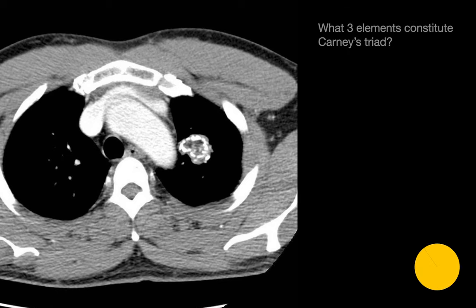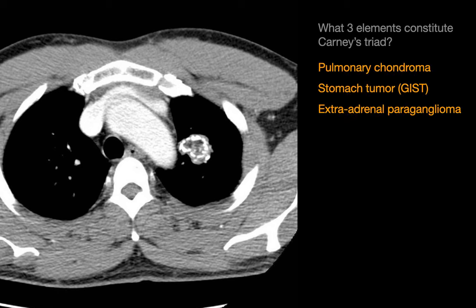What three elements constitute Carney's triad? The three elements of Carney's triad are pulmonary chondroma, GI stromal tumor, and extraadrenal paraganglioma.